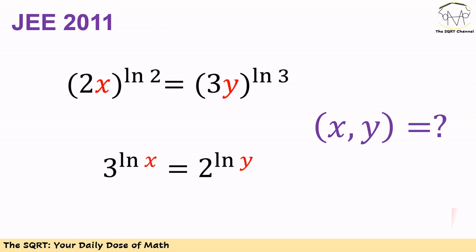Hello everyone, in this video we are going to talk about a problem from JEE 2011. In this problem we have 2x to the power of ln 2 equals 3y to the power of ln 3. We also have 3 to the power of ln x equals 2 to the power of ln y, and we want to find all possible values for x and y to satisfy these two equations. Before moving forward to talk about the solution, make sure that you pause the video to think about the problem.